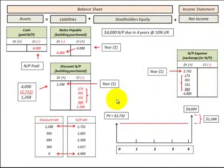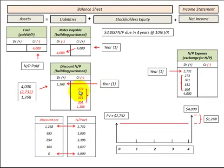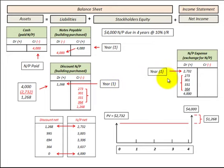When we're talking about these contra accounts — in this case the discount to notes payable — we use this as a balancing entry to represent the present value, or the fair value, of what the notes payable is for each of the years that we have this notes payable on our books.